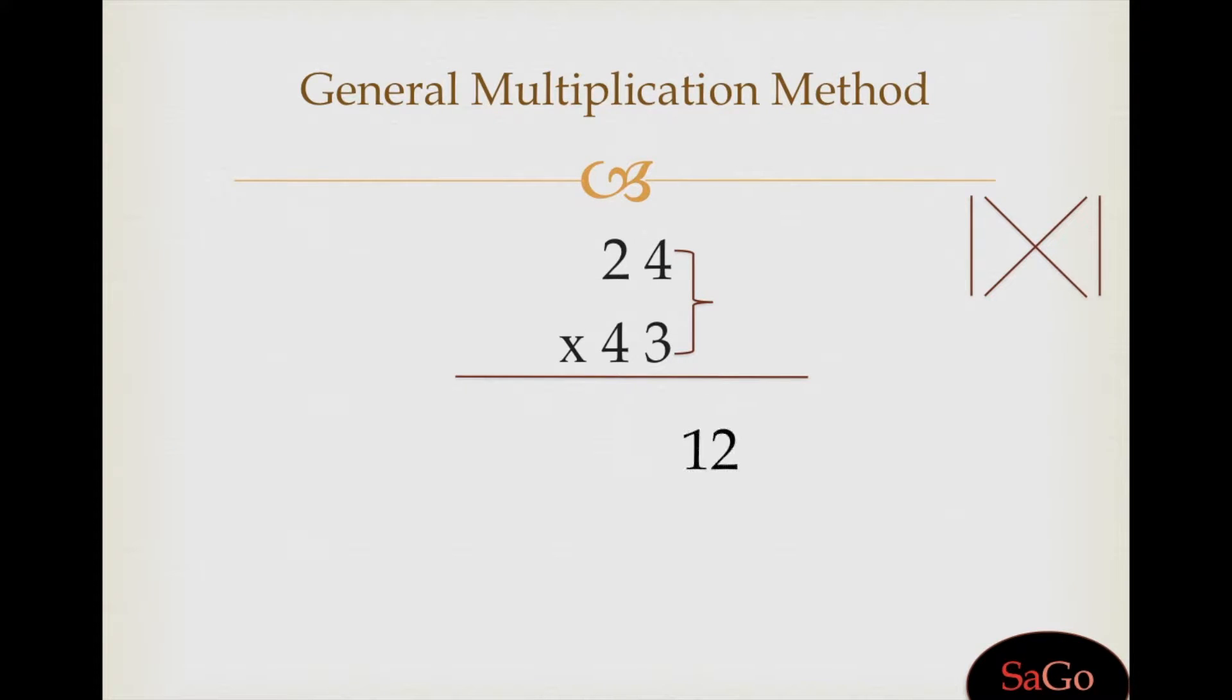Now make X. X means the cross multiplication of these digits and addition: two threes are six, plus four fours are 16; 16 plus 6 makes 22. Write 22, put a slash. Now make I.